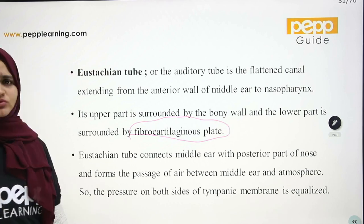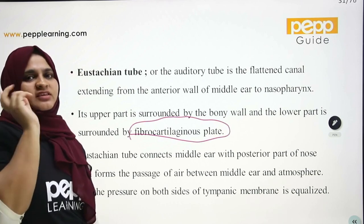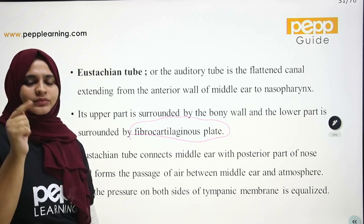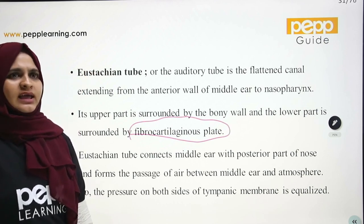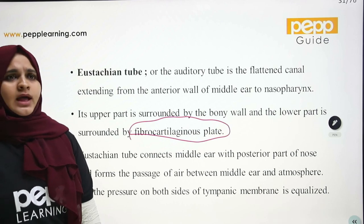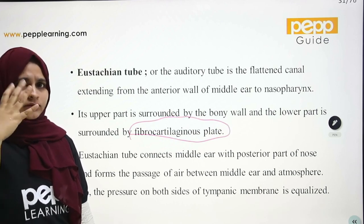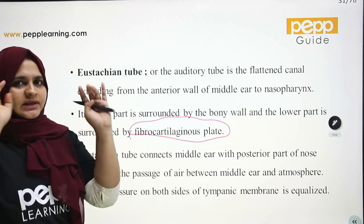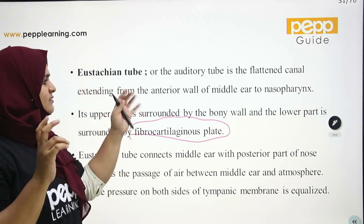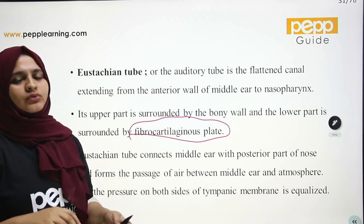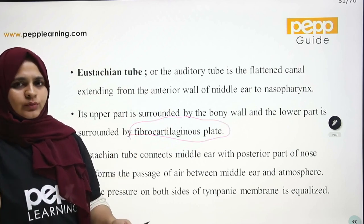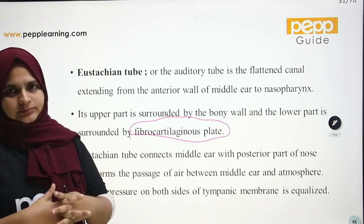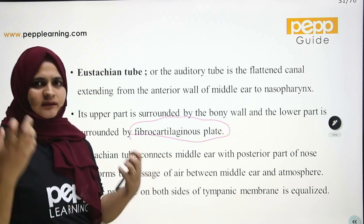The pressure on both sides of the tympanic membrane is equalized via the eustachian tube. For example, when you are on a plane, the eustachian tube allows air to pass and reduces air pressure differences across the tympanic membrane.